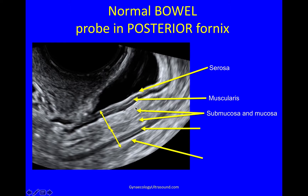Deep to that you've got the submucosa and mucosa, and then it repeats again on the other side — submucosa and mucosa. This one is the muscularis layer, and then here you've got the serosa. So the lumen of the bowel is here.